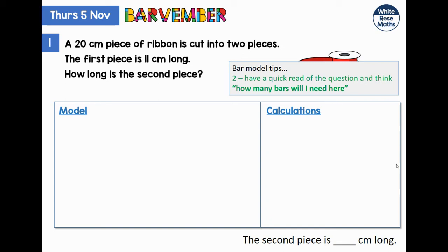First thing we should do when we look at one of these questions is: how many bars will I need? This is an interesting question because it's about one piece of ribbon, but it's also about two pieces. So it's perfectly possible to create a bar model with one bar representing the ribbon or two bars representing the two pieces. The example I'm going to show here uses one bar, but please send into your teacher any examples that you make using two bars.